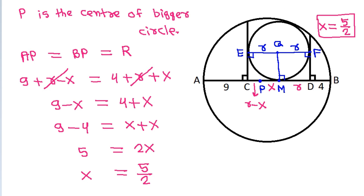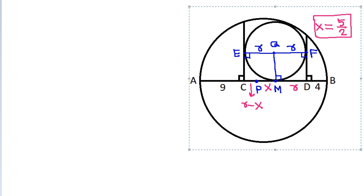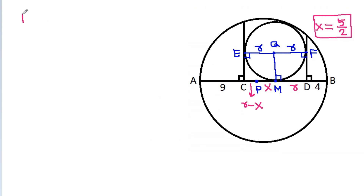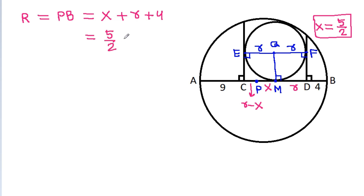And capital R it is equal to PB, and it will be equal to X plus small r plus 4. X is 5 by 2, plus small r, plus 4, and it is equal to 5 by 2 plus 4, that is 13 by 2, plus small r. So R equals 13 by 2 plus small r.